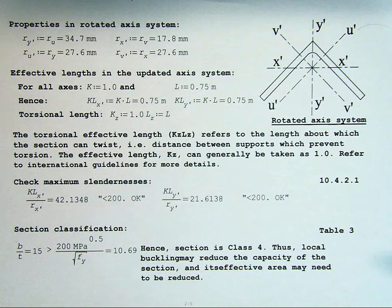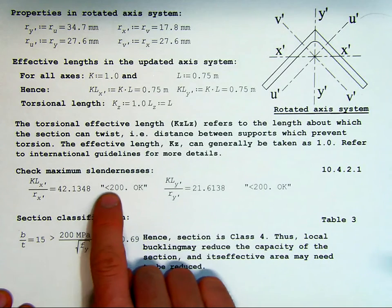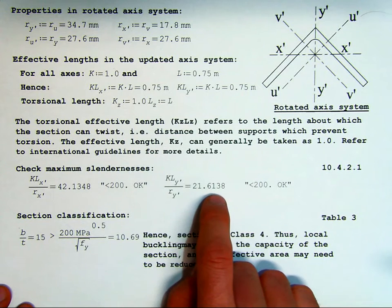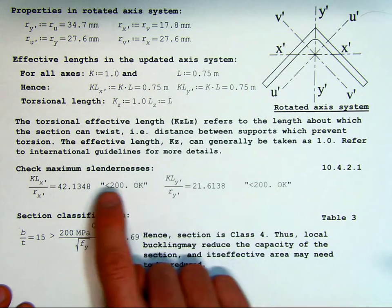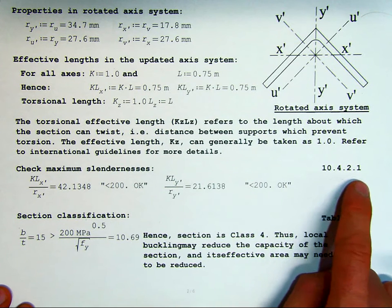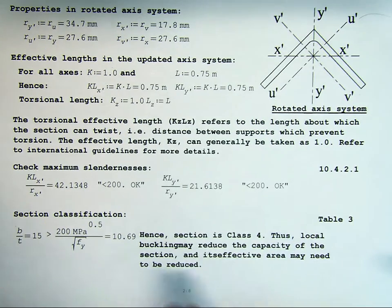The first thing we need to check now, now we have our effective lengths, is simply our slendernesses, and that is for buckling about the different axes. Our kLx/rx is 42.8. This is less than 200, therefore OK. And kLy'/ry' is 21, less than 200. So that's OK. So we've checked those, and that's according to Section 10.4.2.1 of the South African Code.